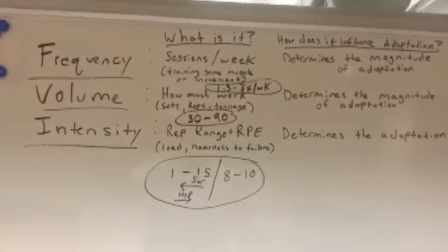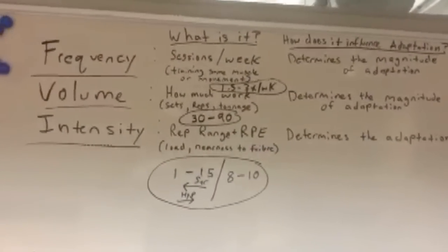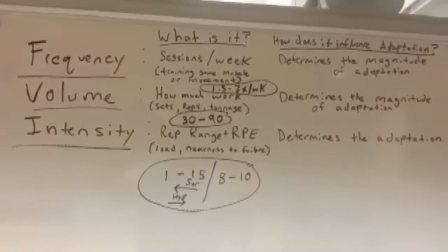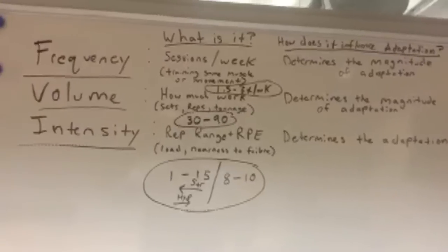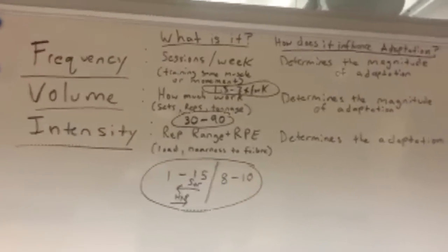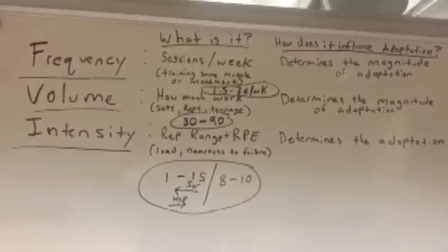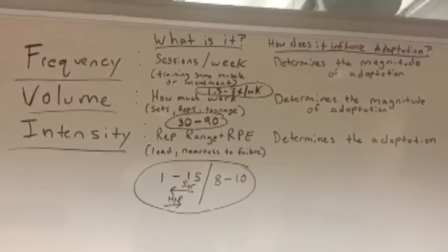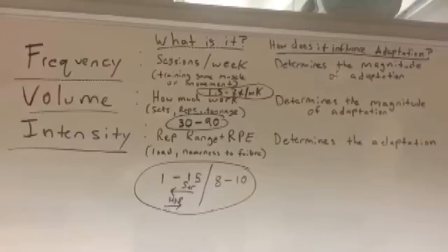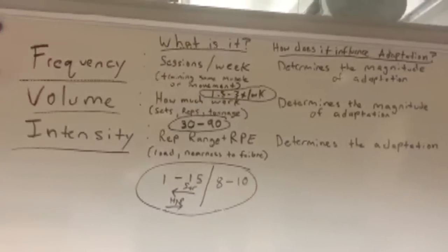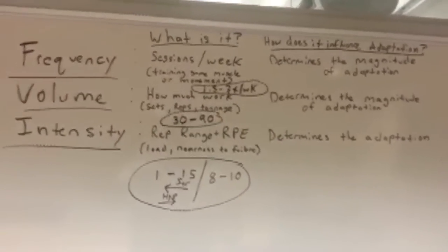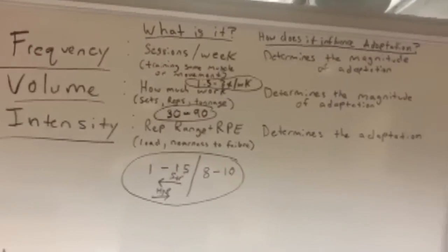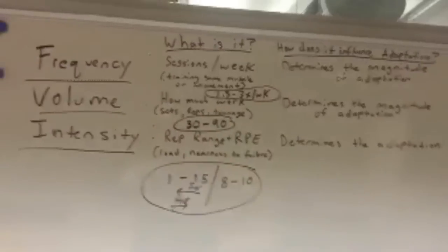Frequency is how many sessions per microcycle or week that you're doing — meaning training the same movement or muscle group in a given week or microcycle. Volume is how much work is done, typically expressed as sets or reps per body part or the total tonnage for a movement. And then finally, intensity, which is a combination of the rep range and how close to failure you're getting — how much weight is on the bar, how close you take that set to failure, and how many reps you're doing. An easier way to say it is rep range and rating of perceived exertion, or RPE.